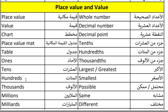Thousands. Millions. Hundreds of thousands. Thousands. Millions. On the right side: whole number. Whole number. Decimal number. Decimal number. Decimal point. Decimal point. Tens. Tens. Hundreds. Hundreds.